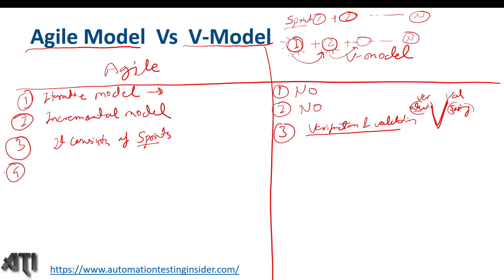In agile methodology there are five phases in each sprint: requirement analysis, design, coding, testing, and release and maintenance. In V model, there are five phases on the verification side — requirement analysis, high-level design, low-level design, coding, and release — and five phases on the validation side: unit test level, functional testing, integration testing, system testing, and acceptance testing. So five phases on each side of verification and validation.